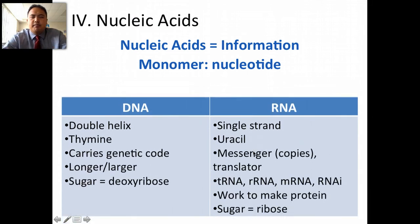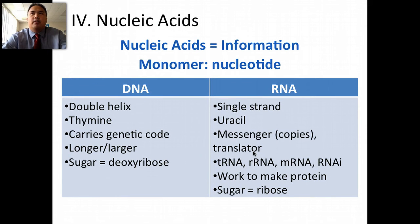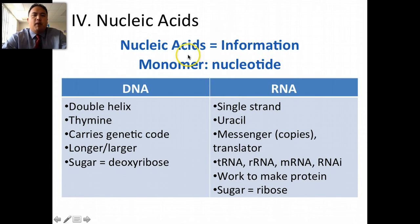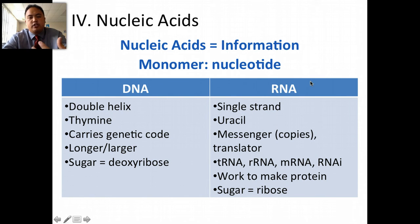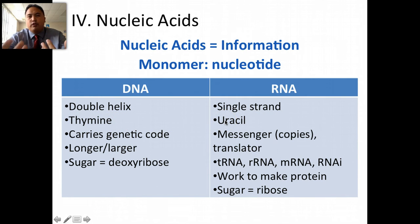The last macromolecule — the one people often forget — is nucleic acids. Nucleic acids store information. The monomer of a nucleic acid is a nucleotide. There are only two nucleic acids: DNA, which is a double helix with a sugar of deoxyribose; and RNA, which is a single strand and has U instead of T. Again, all this is review — hopefully you remember it months after we taught it to you.